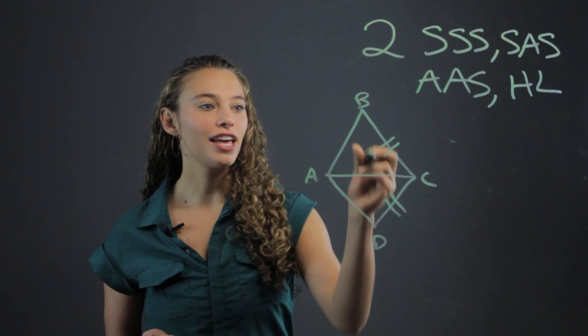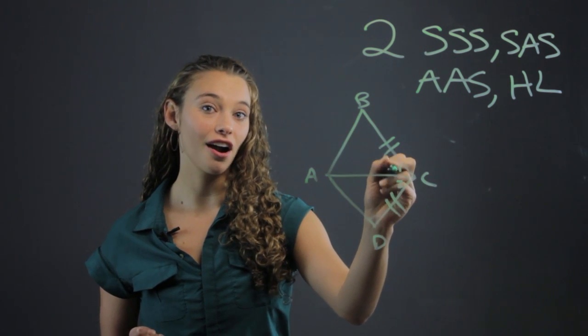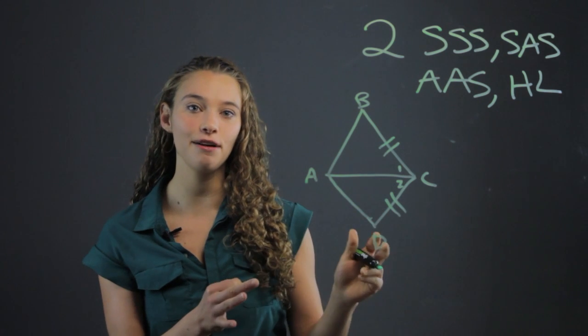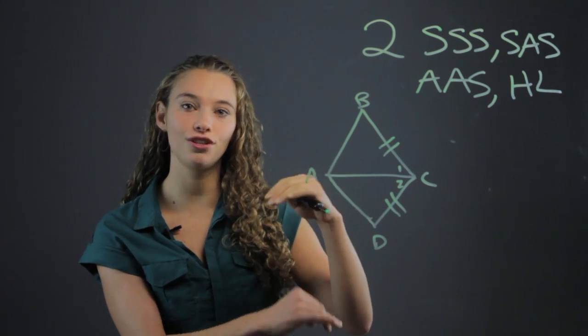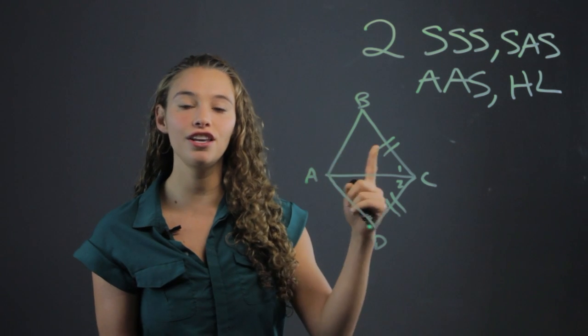Well, when you know that this is bisected, then you know that these two angles are congruent to each other because an angle bisector bisects into two separate equal parts.